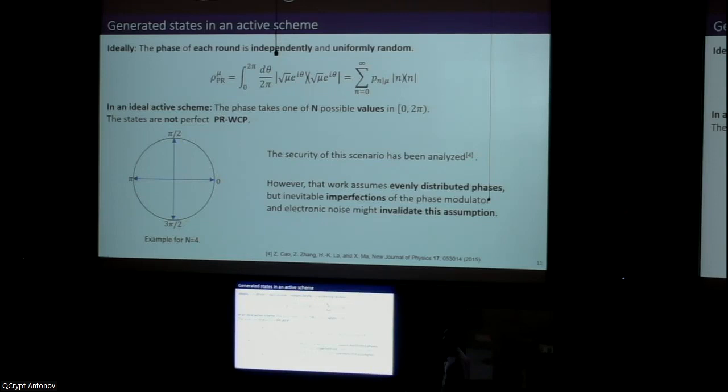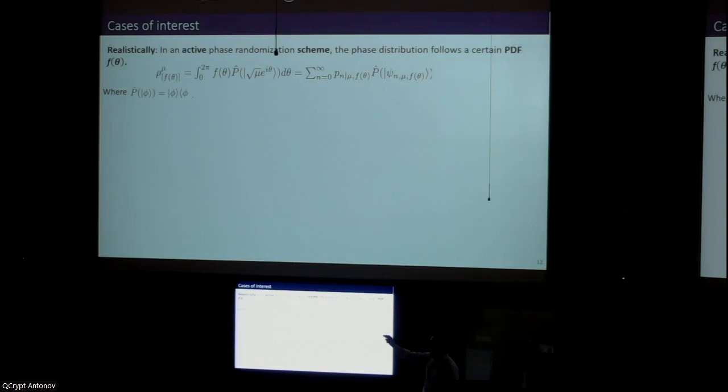But we need to go a bit further and basically incorporate imperfections that might prevent the phases from being evenly distributed in the interval. What is the most general case that we can think of? Essentially, here we have that the phase follows a certain PDF f_θ that can be arbitrary. The photon number statistics are no longer Poissonian and the states also depend on this f_θ quantity. This analysis that I'm going to present now is applicable regardless of the exact form of the PDF, but we are going to consider here just two cases for simplicity.